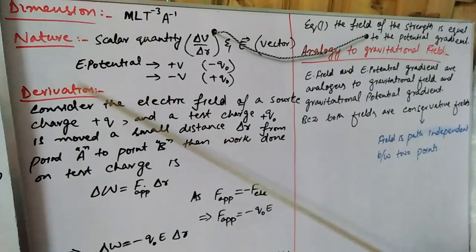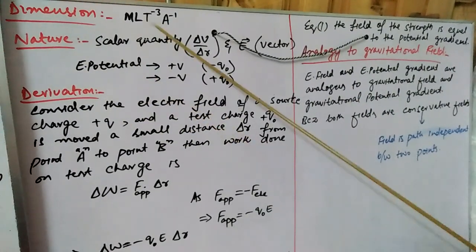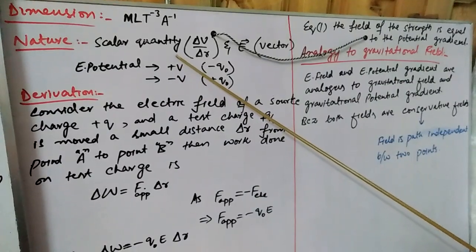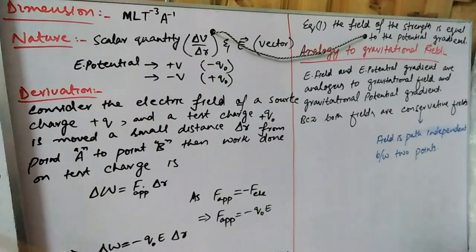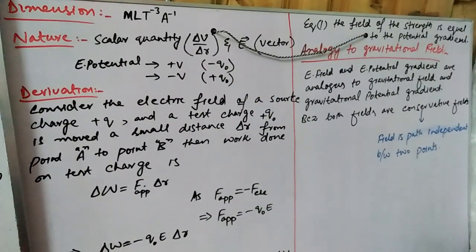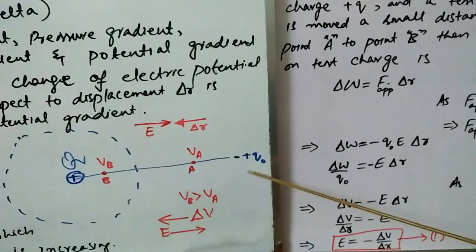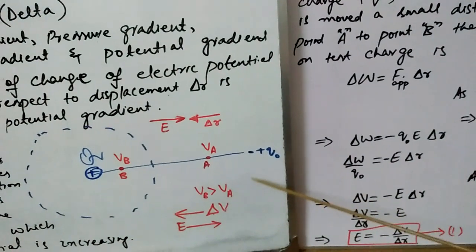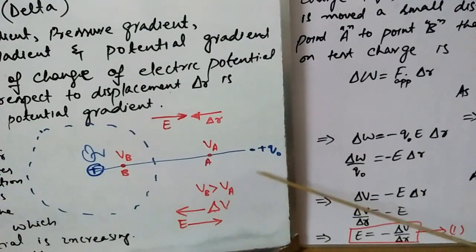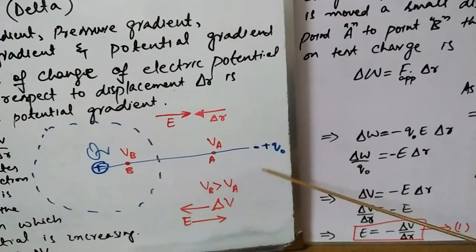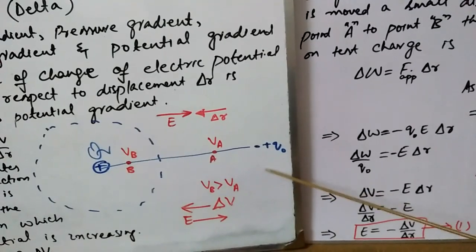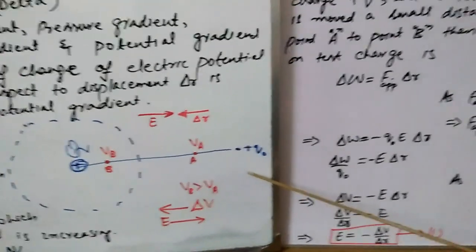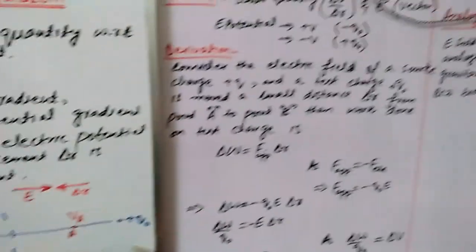Electric potential may be positive or negative. If we are taking a negative test charge, then electric potential may be positive, and if we are taking a positive test charge, then electric potential will be negative.